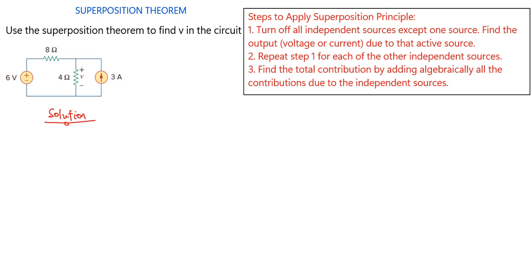Here are the steps to apply the superposition theorem. The first step says to turn off all independent sources except one source, and then find the output voltage or current due to that active source. The second step says to repeat step 1 for each of the other independent sources. The third step says to find the total contribution by adding algebraically all the contributions due to the independent sources.